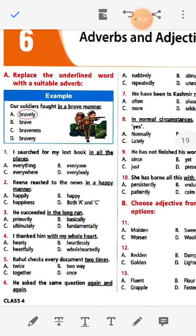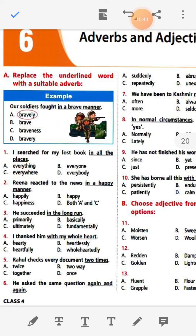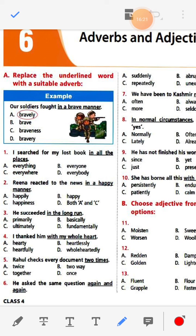See the questions: Replace the underlined word with a suitable adverb. Number one: I searched for my lost book in all the places. Options: everything, everyone, everywhere, everybody. The answer is 'everywhere' because the other options refer to people or things — I searched for my lost book everywhere.